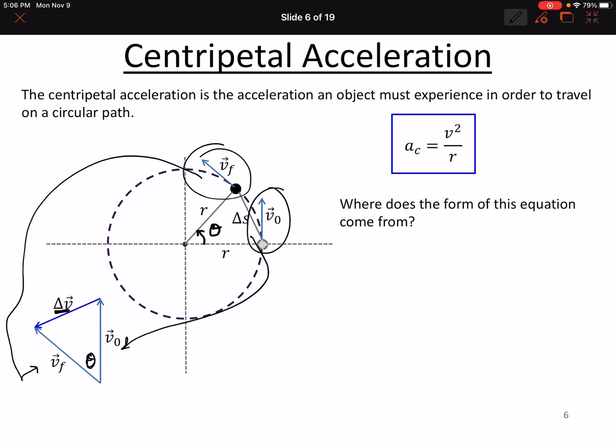Now because of the same theta, we know and that the magnitudes of V0 and Vf are the same. Same speed but different directions.